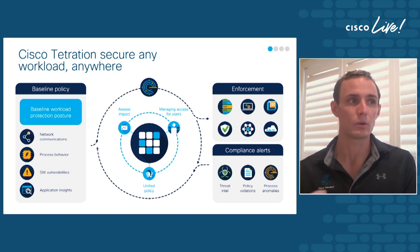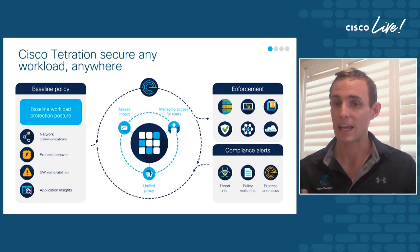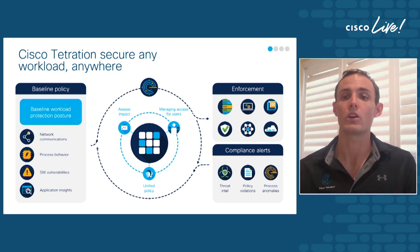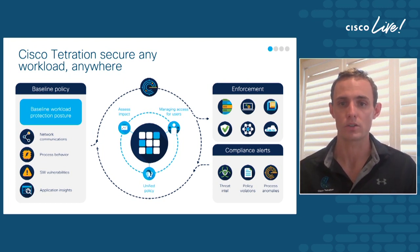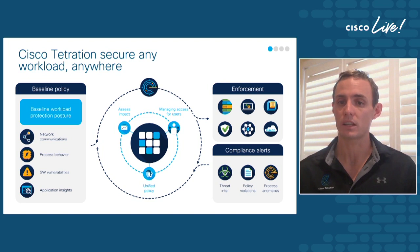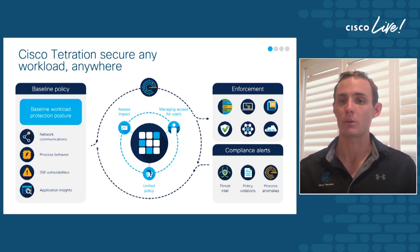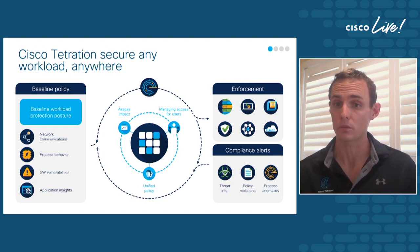Once we've got that information, we can move to enforcement. The Tetration agent takes and applies that enforcement natively on the host — it doesn't matter where the application is running, being close to the host means we can secure it appropriately. There are also different techniques for containers. Equally, we publish that information and integrate with Cisco and third-party tool sets, so we can take that policy and implement it on other platforms — for example, using it through firewall automation to implement a secondary level of security. That information is open, published, and ready to be used.